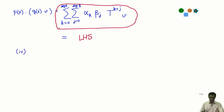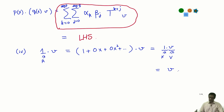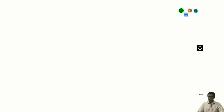Let me check the final axiom, axiom 4, which says that if I take the identity element of my ring and scalar multiply it with any vector, I should get back that vector. The identity element of k[x] is just the constant polynomial 1, which we think of as 1 + 0·x + 0·x² + ⋯ acting on v. By definition, this gives 1·v plus zero contributions from all higher terms, which is just the usual scalar multiplication by 1 in the vector space. So 1·v = v by the axioms of the vector space over k. All four axioms hold.